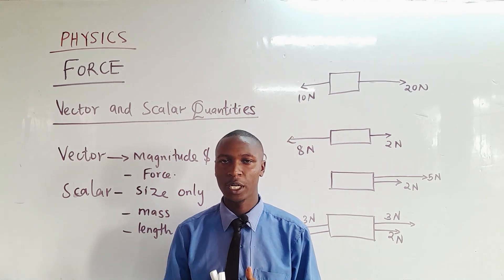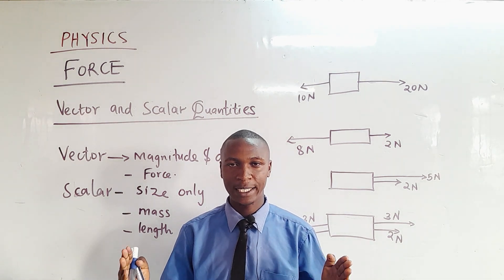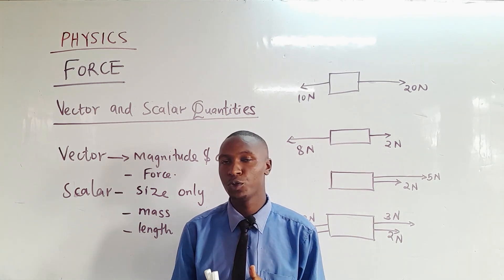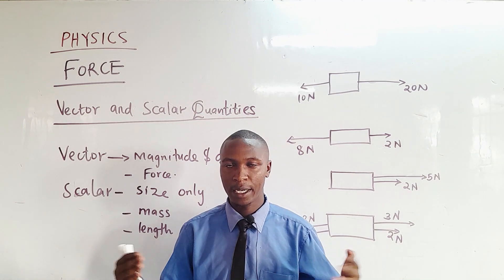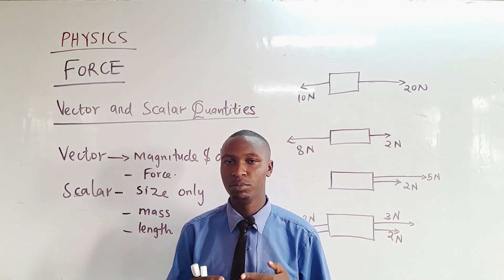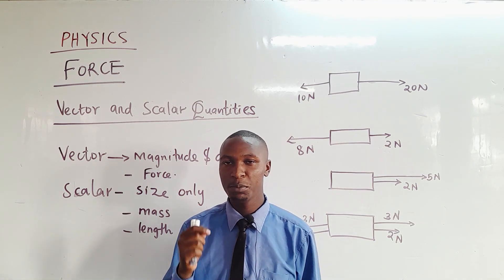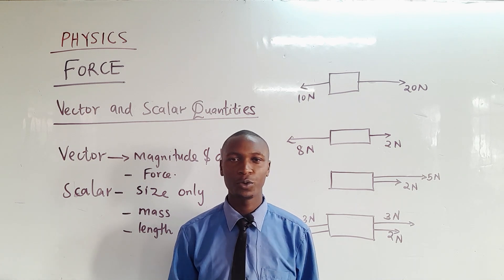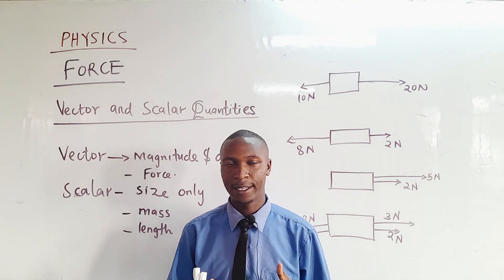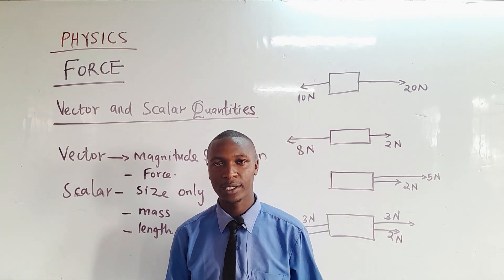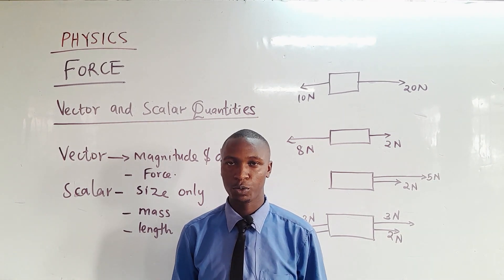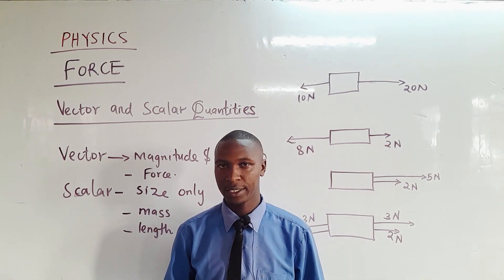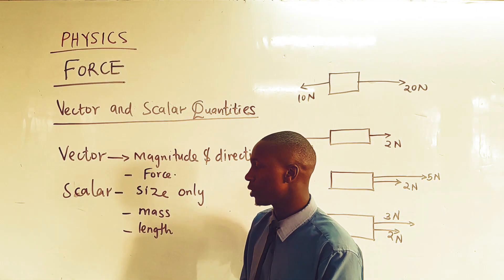When you talk about size, you could describe a quantity as 20 grams or 50 meters. But for that same quantity to be a vector quantity, you also have to state its direction — for example, 50 meters moving towards the north or south. When you talk about a quantity and specify the direction it's going, that becomes a vector quantity.